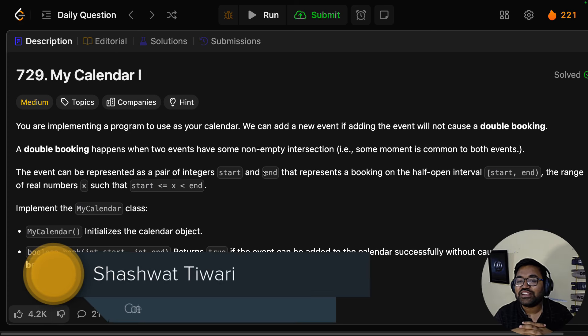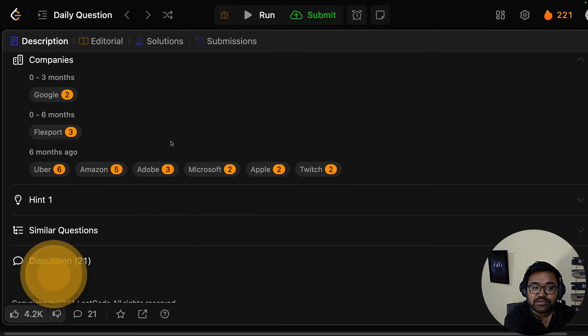Hello everyone and welcome back to another video of the LeetCode daily challenge. We will discuss My Calendar 1 and talk about company tags. It has been asked in Google, Flexport, Uber, Amazon, Adobe, Microsoft, Apple, and Twitch.